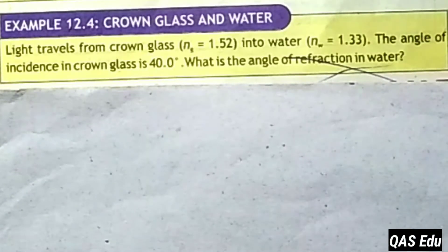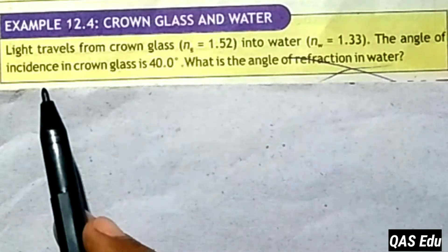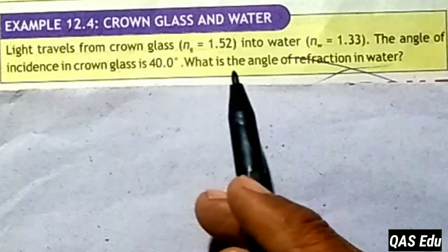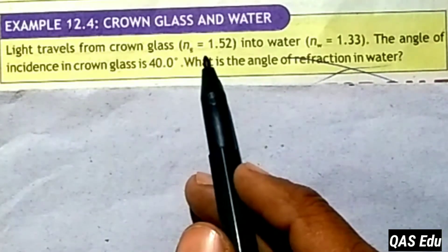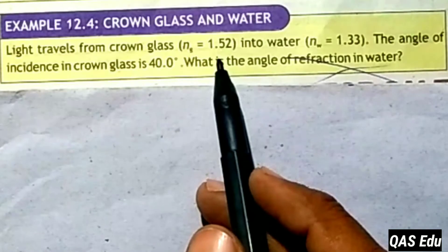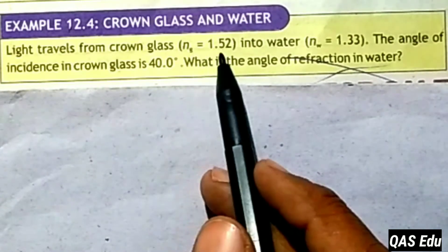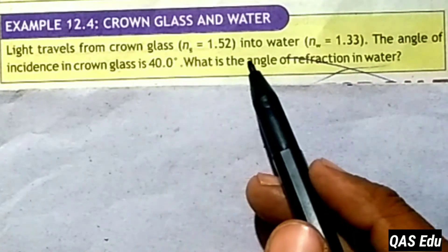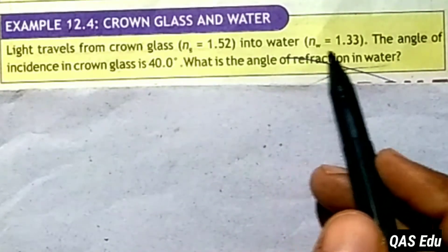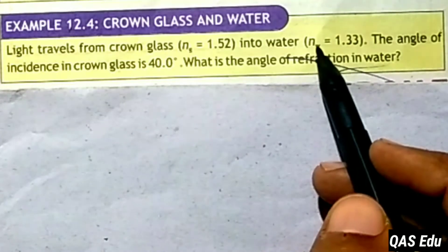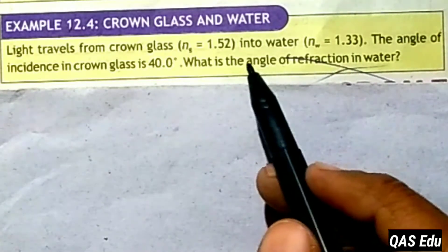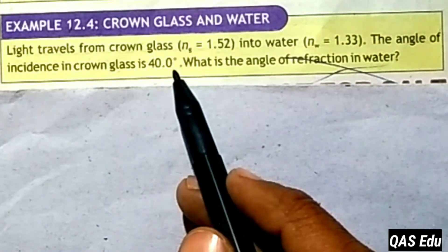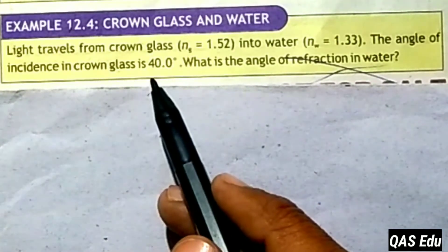Bismillahirrahmanirrahim. Example 12.4: Light travels from crown glass into water. The refractive index of crown glass is given, and there is bending of light — refraction — because light enters from glass into water. The refractive index of water is NW. The angle of incidence in crown glass is 40.0 degrees.